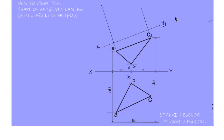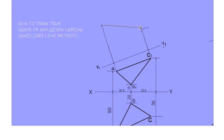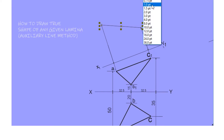Next we have to draw a line passing through from the tip of the line that we drew on the X1Y1. As you can see I've drawn mine right there.